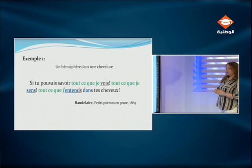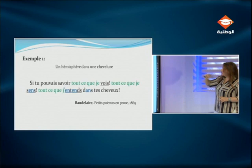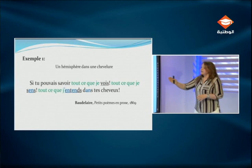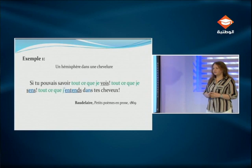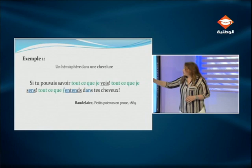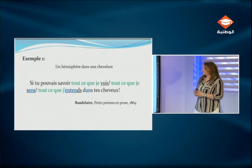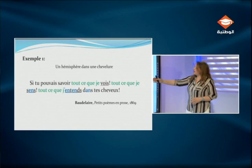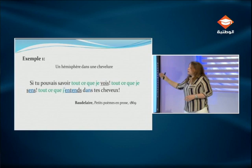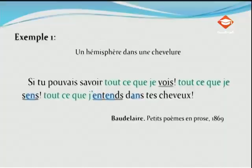Nous allons voir un autre exemple du même poème « Un hémisphère dans une chevelure » : « Si tu pouvais savoir tout ce que je vois, tout ce que je sens, tout ce que j'entends dans tes cheveux. » Dans cette phrase, vous voyez la même assonance en « en » et les mêmes verbes de perception. Grâce à la chevelure, Baudelaire voit tout un monde, il sent et il entend — tous ses sens sont en éveil. Et vous voyez même une anaphore : en répétant « tout ce que je » trois fois, il y a une cadence ou un rythme qui se crée dans cette phrase, et elle ressemble à un vers.